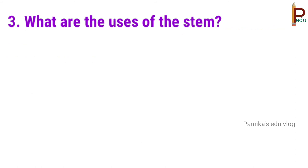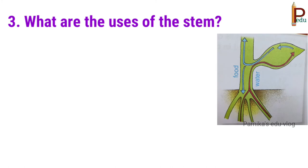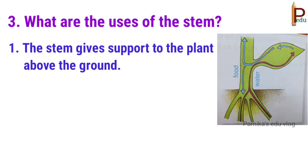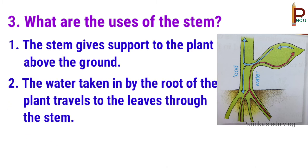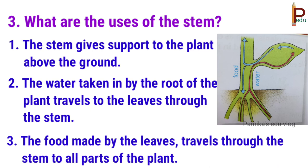Third one: what are the uses of the stem? The stem gives support to the plant above the ground. The water taken in by the root of the plant travels to the leaves through the stem. The food made by the leaves travels through the stem to all parts of the plant.